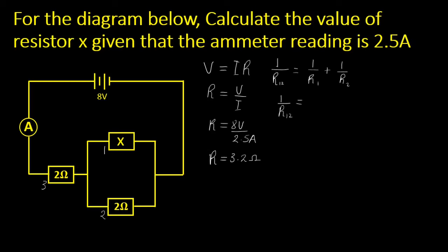Then this will give us 1/R₁₂ equals 1 over resistor one. The reading on resistor one is x. Resistor two, the reading on resistor two is 2Ω. So 1/R₁₂ equals, the LCM here is 2x, so x into 2x is 2.